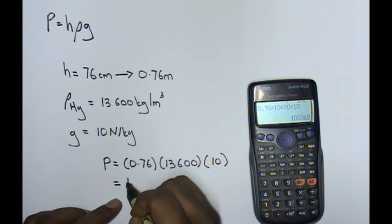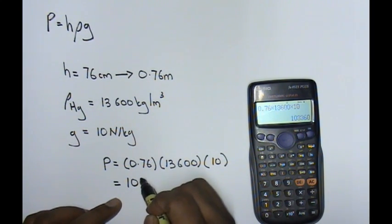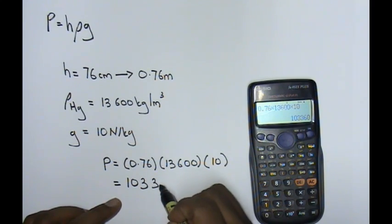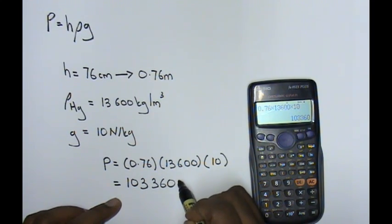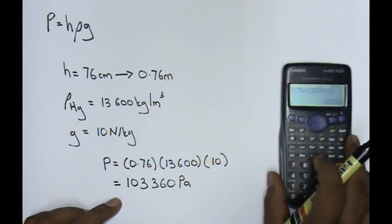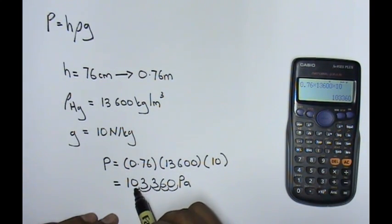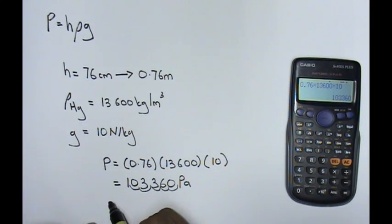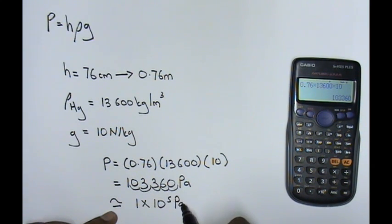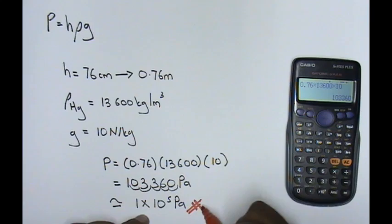The value that you will obtain is 103,360 and the unit of Pascal. You can also write it as 1, 2, 3, 4, 5. This is the simplified version, guys. Most of the books write it as 1 times 10 to the power of 5 Pascal. This is how we simplify our atmospheric pressure.